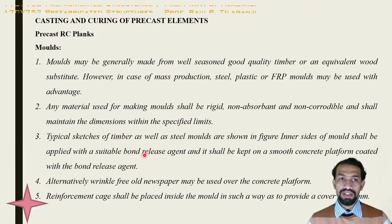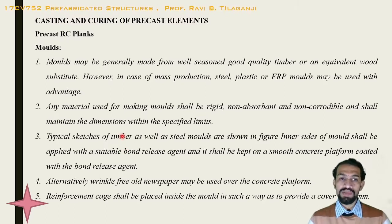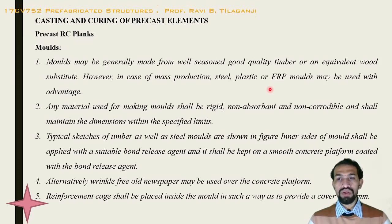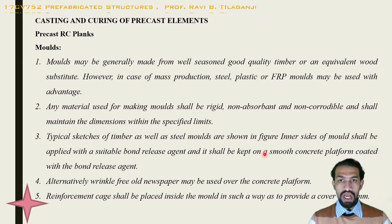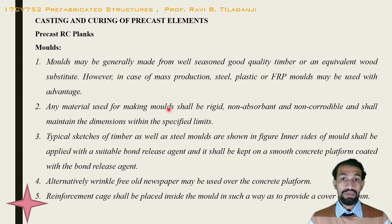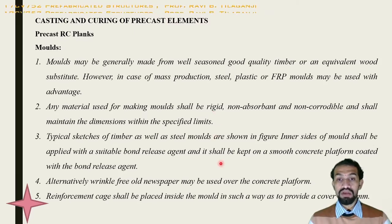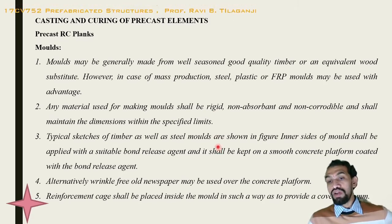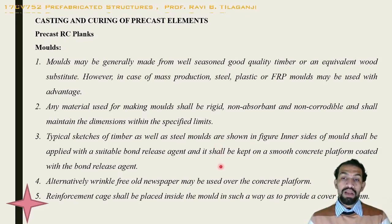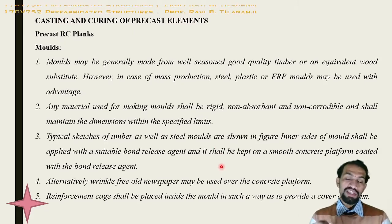Casting and curing of precast elements: moulds may be made of seasoned good-quality timber or equivalent wood. For mass production, steel, plastic, or FRP moulds can be used. Any material used for making a mould shall be rigid, non-absorbent, non-corrodible, and shall maintain dimensions within specified limits. The inner side of the mould shall be applied with a suitable bond release agent and kept on a smooth concrete platform coated with cement powder.